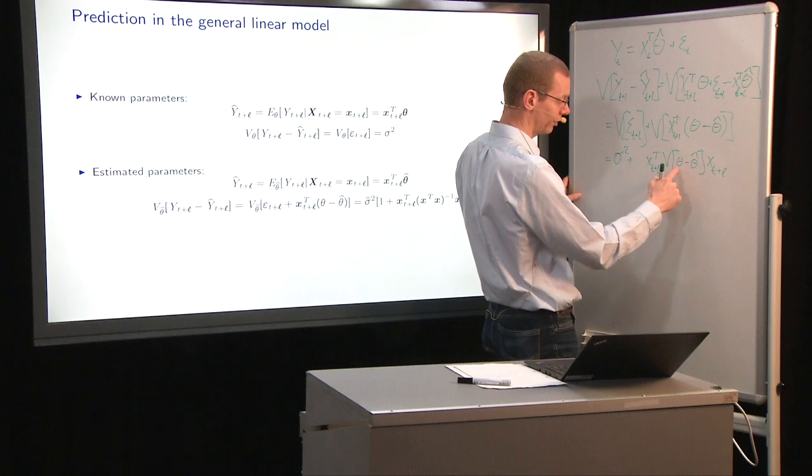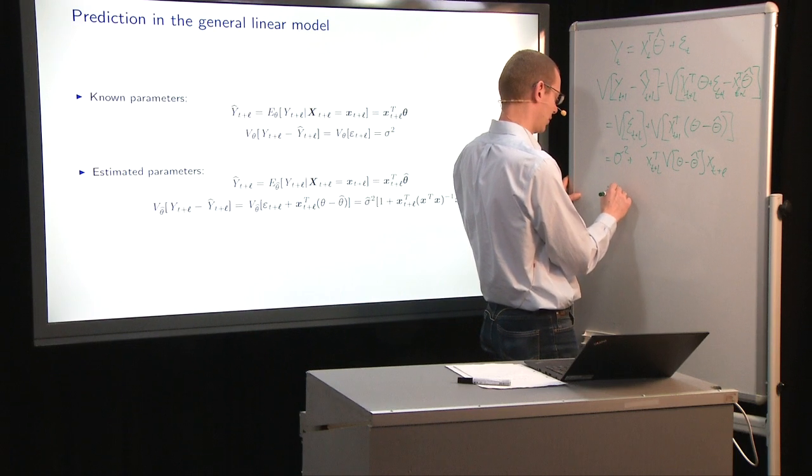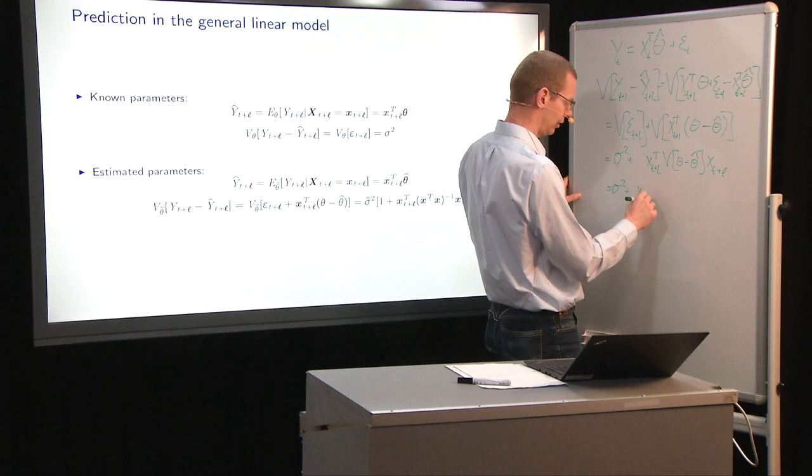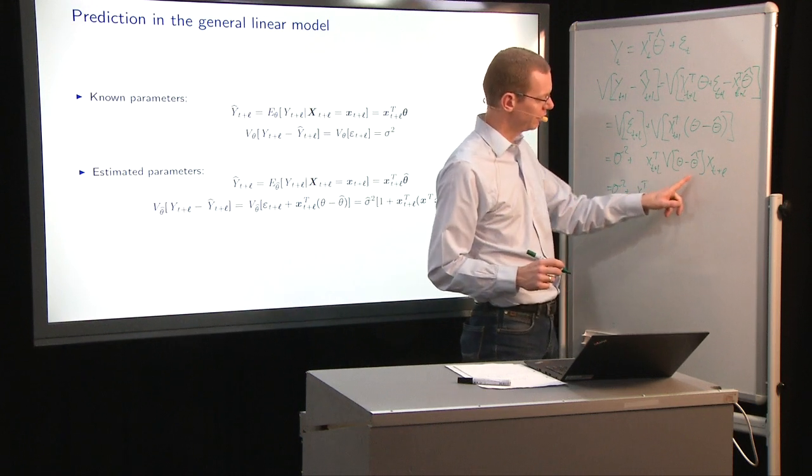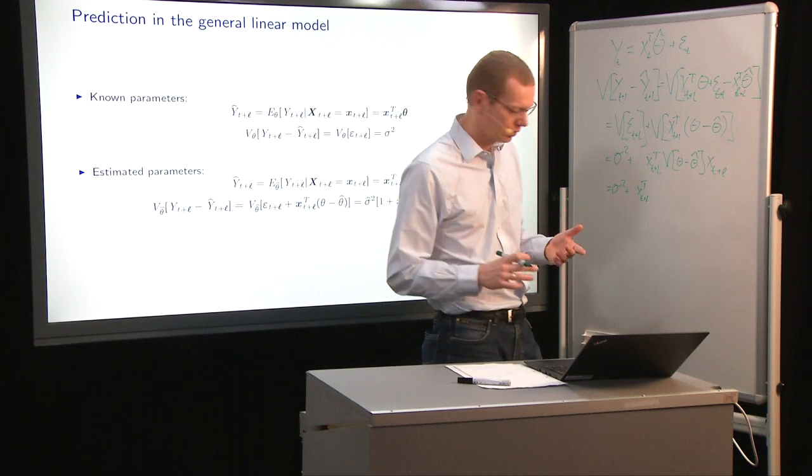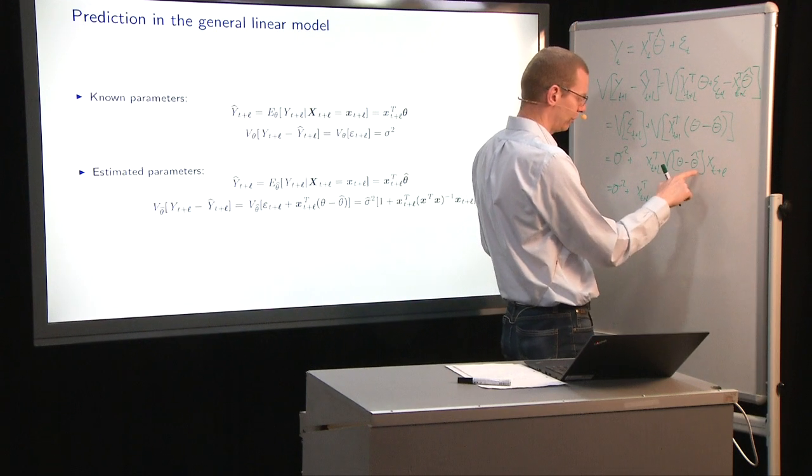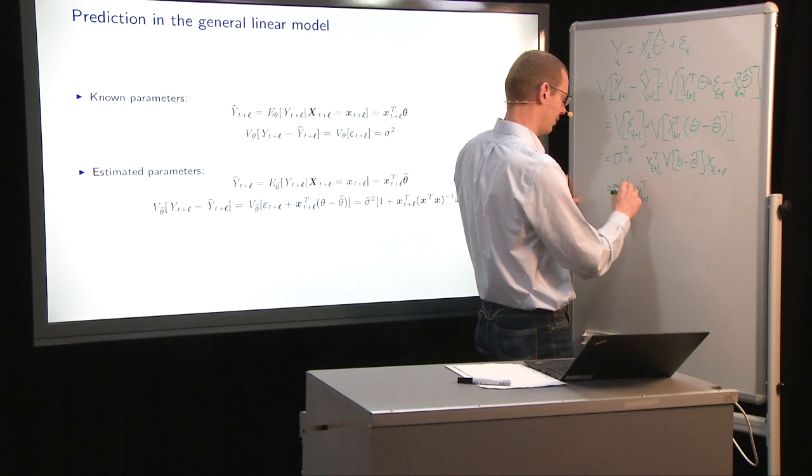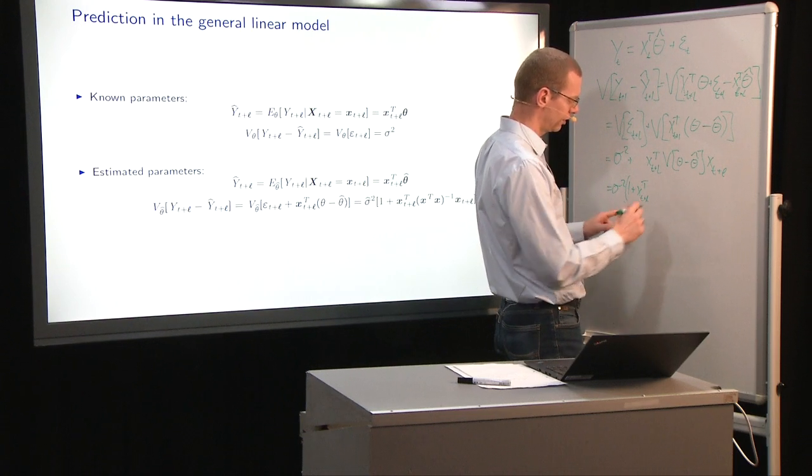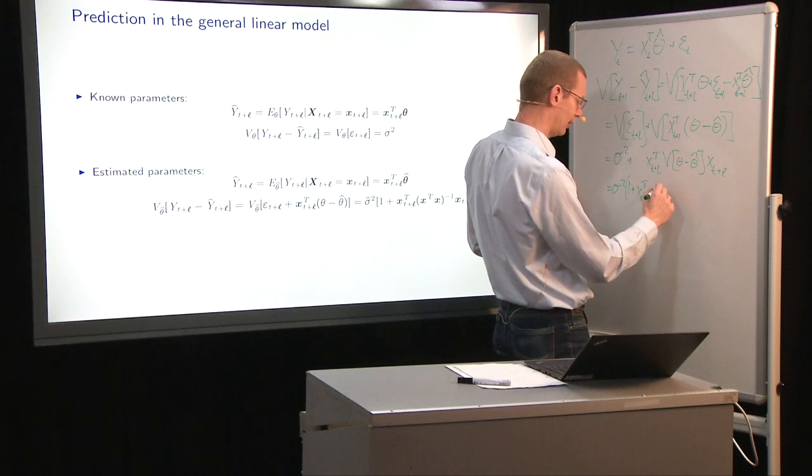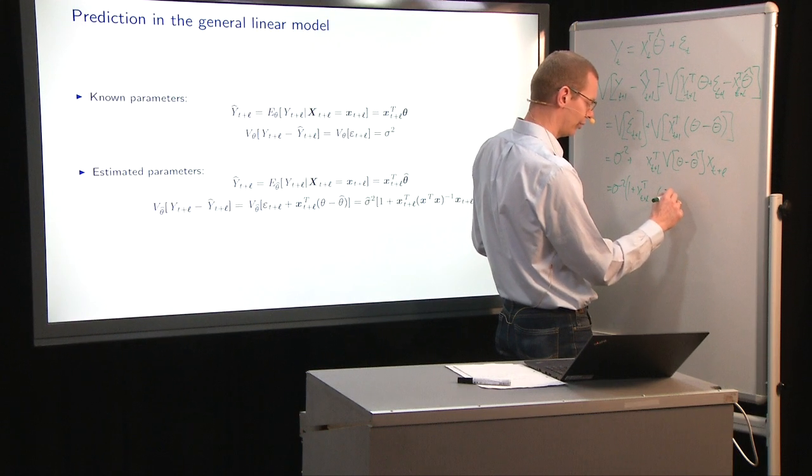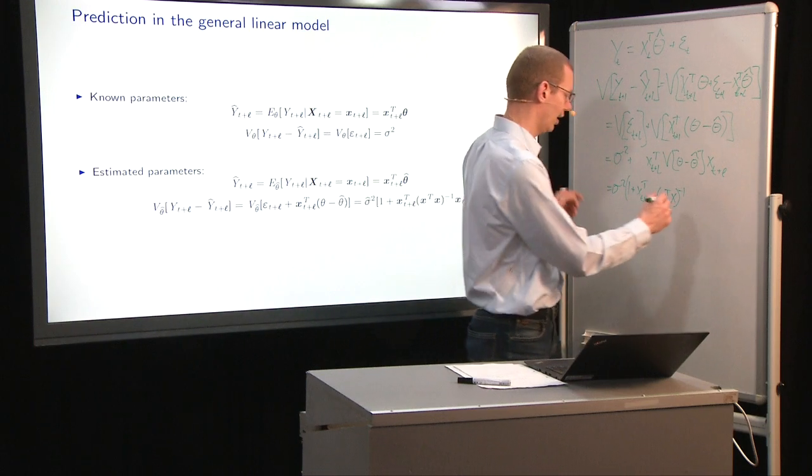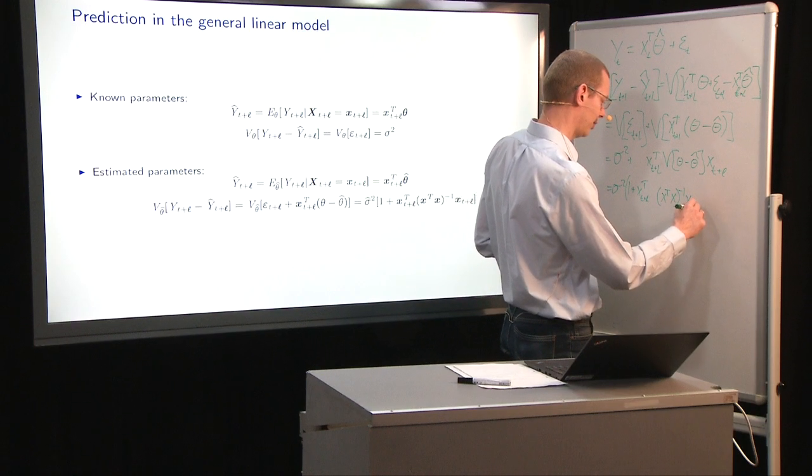And then we have the transpose on the back here, like that. And now what was the estimator that we have for the uncertainty of sigma here? A variance on theta. We have sigma hat here. Then we have X t plus L transpose. What we have in here is the lowercase sigma square. Let's put that outside in front. So we have one plus this.